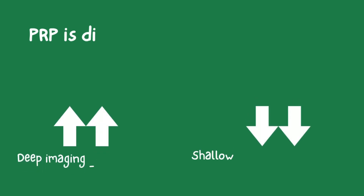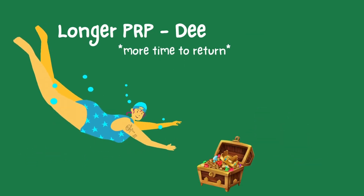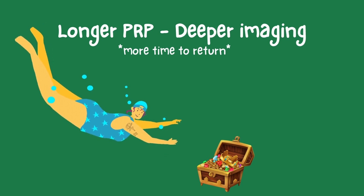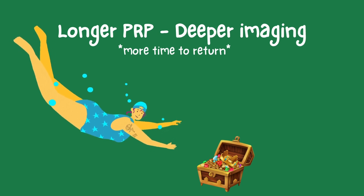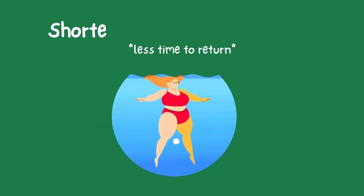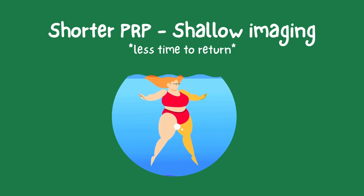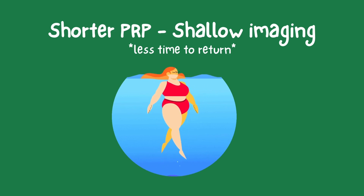PRP is directly related to the depth of imaging. When imaging deep, the PRP is long, and when imaging shallow, the PRP is short. Think of it like this: when you're diving deep into imaging, searching for structures deep in the body, you need more time to wait for echoes to return from those distant depths — more time means a longer PRP. But when you're just skimming the surface, capturing images of shallow structures near the skin, you can quicken the pace — less depth means less time for echoes to return, meaning a shorter PRP.